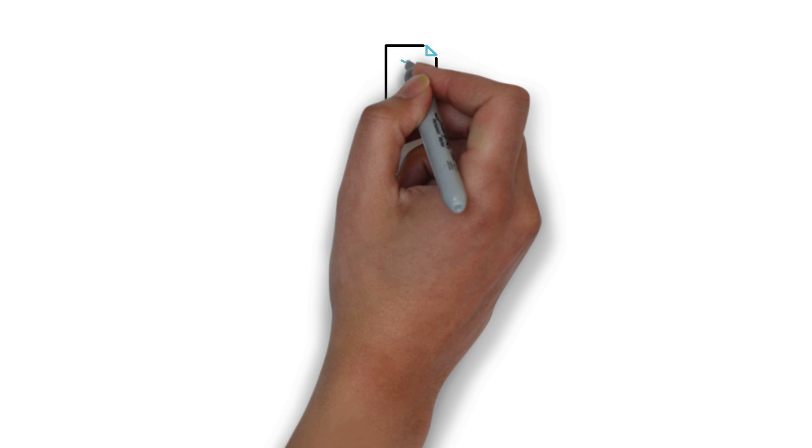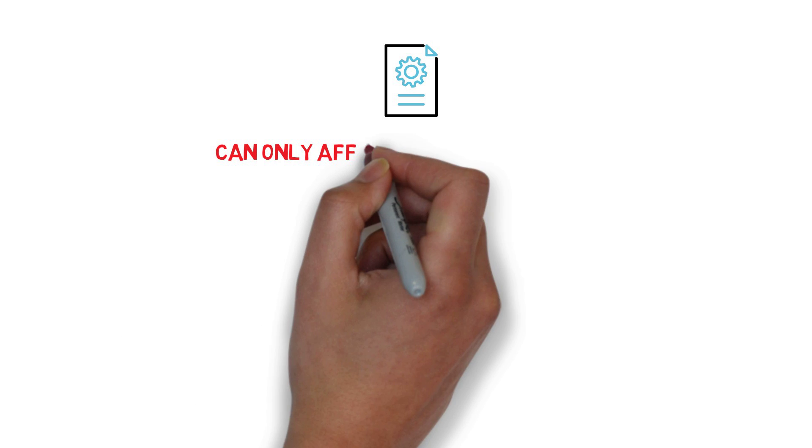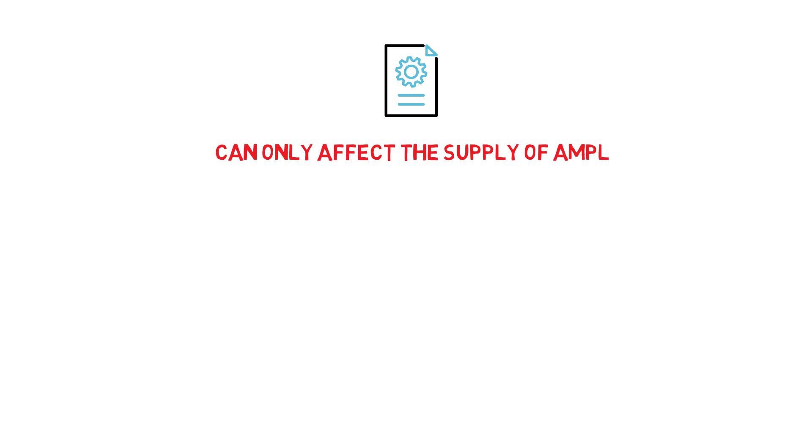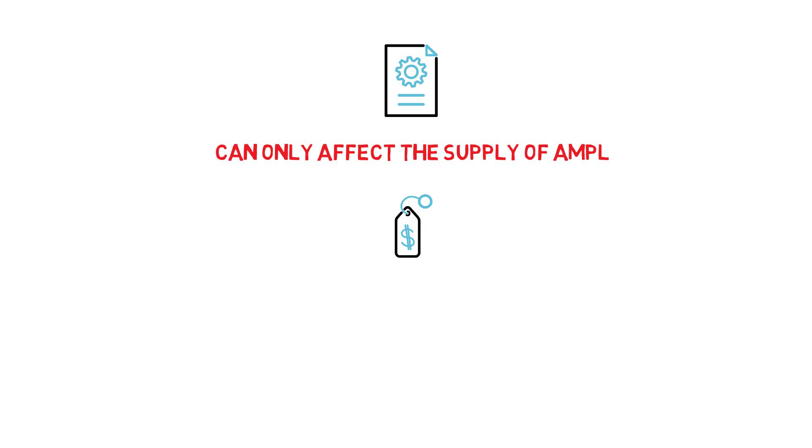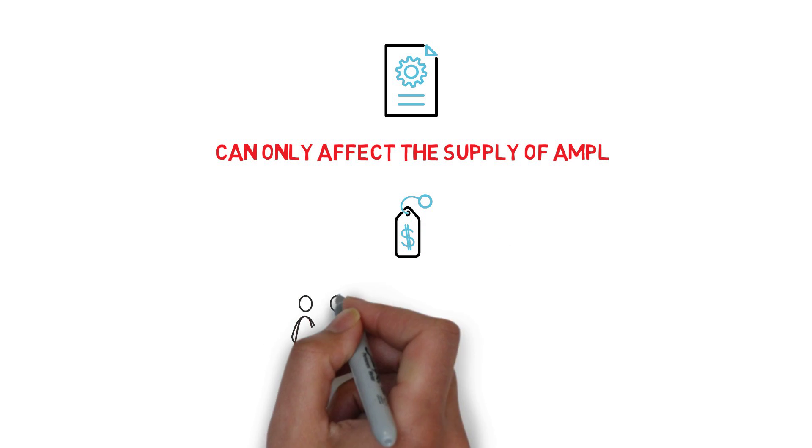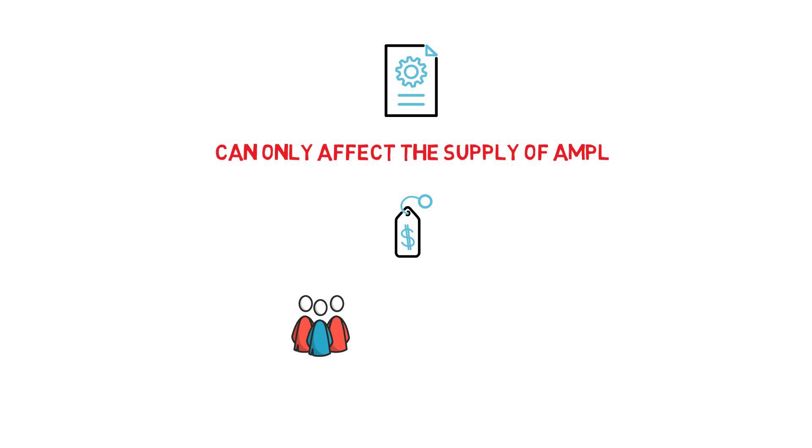One important thing to add here is that the algorithm can only affect the supply of Ample. It cannot, of course, dictate the price directly. It's up to external players to notice the supply change and this should, in theory, drive the price in the correct direction.